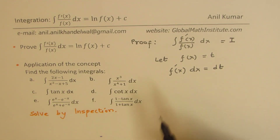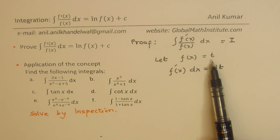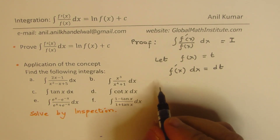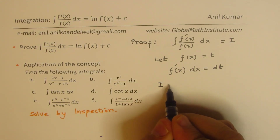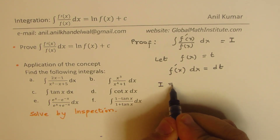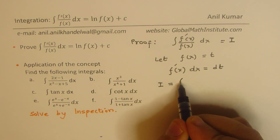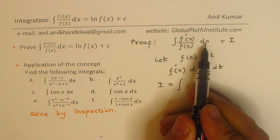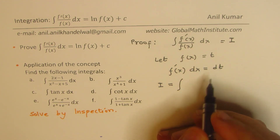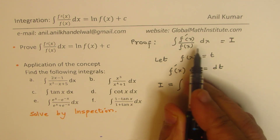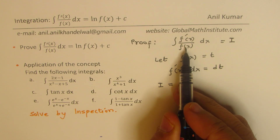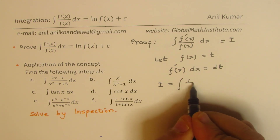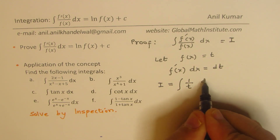This substitution makes our question very simple. We can write that our integral I is equal to: the numerator f'(x) dx becomes dt, and 1 over f(x) becomes 1 over t. So what we get here is the integral of 1 over t dt.